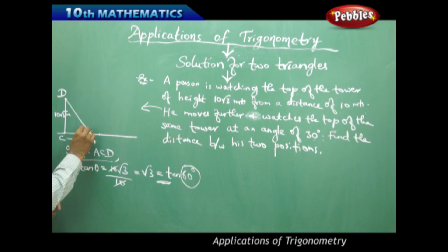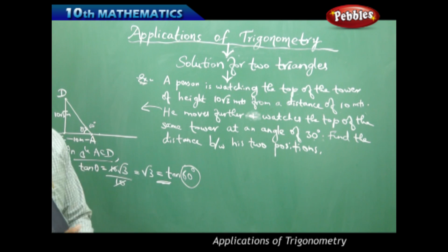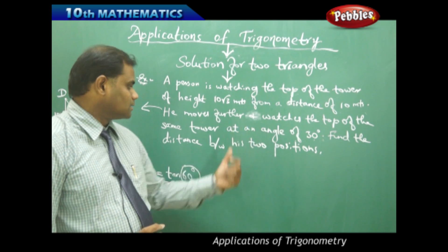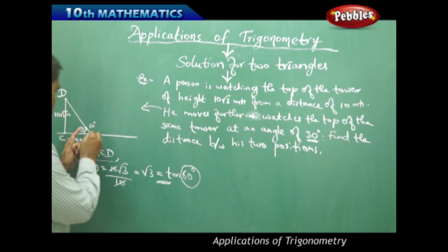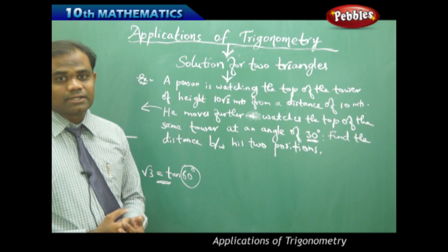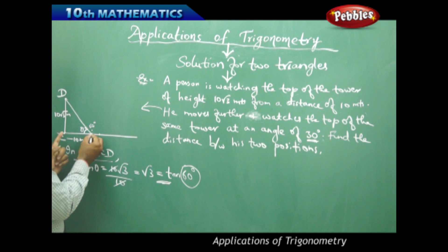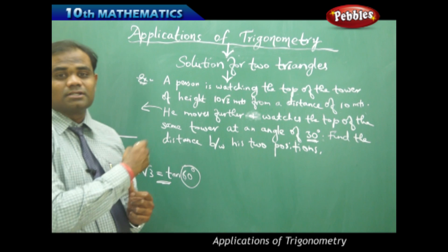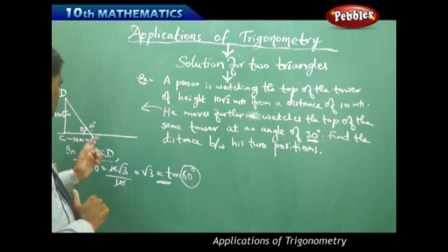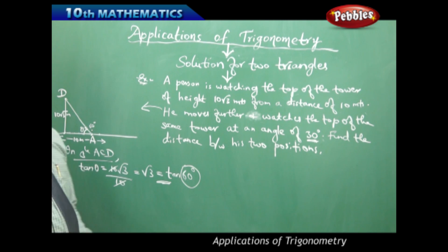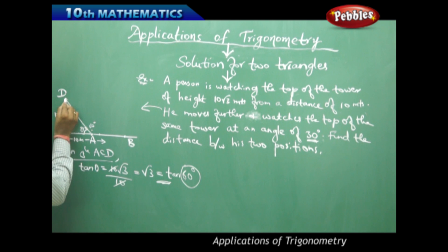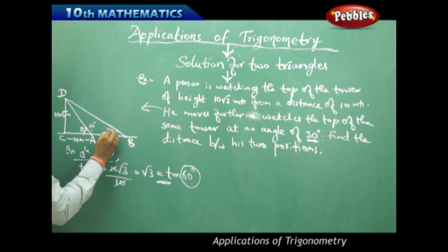So theta equals 60 degrees. Using this, I can find out whether the person is moving to the right or left. Since the person moves further and watches the tower at an angle of 30 degrees, the angle reduces from 60 to 30. As the person moves closer to the tower, the angle increases; as the person moves away, the angle decreases. Therefore, 60 to 30 degrees clearly implies the person is moving away from the foot of the tower, to point B, where the angle is 30 degrees.